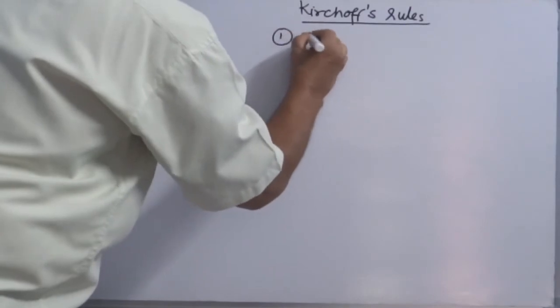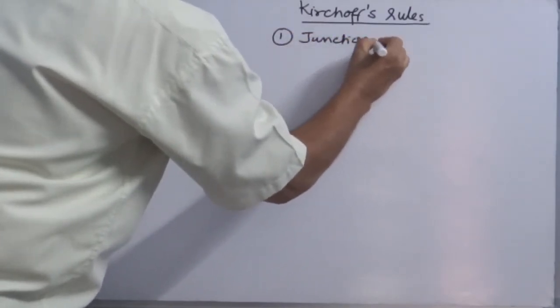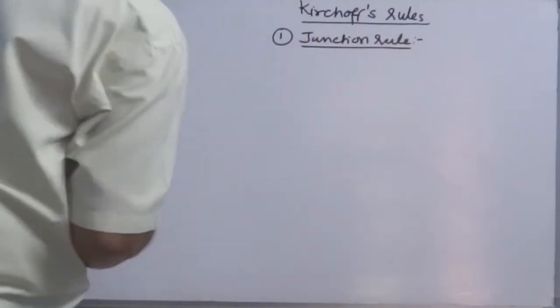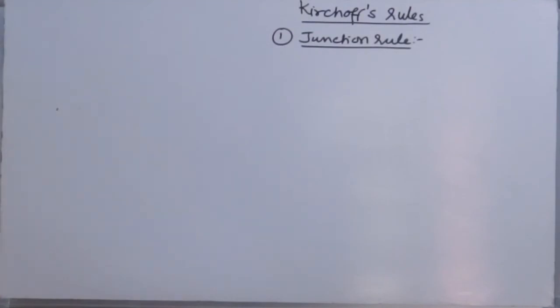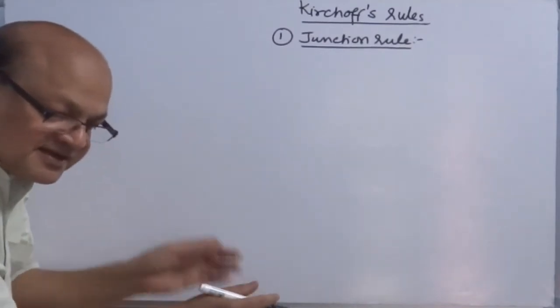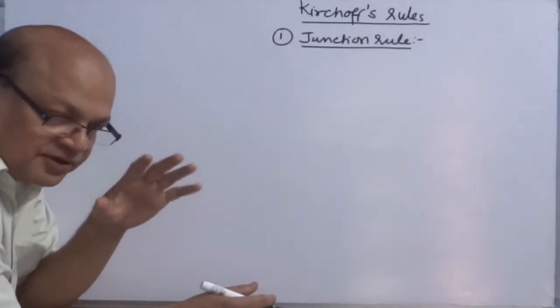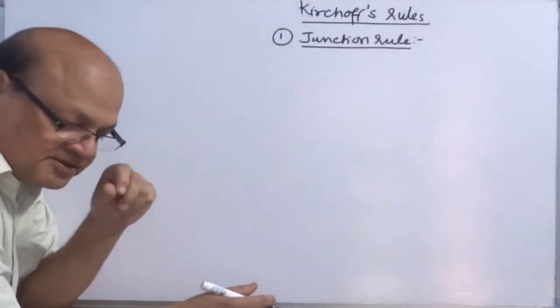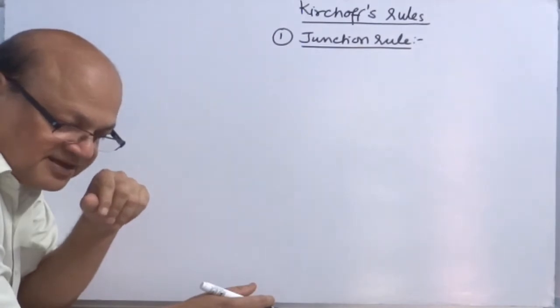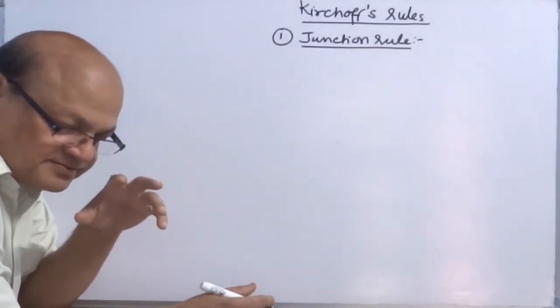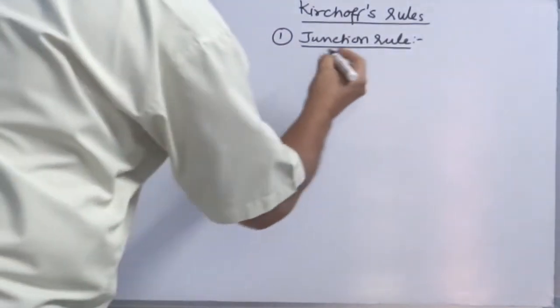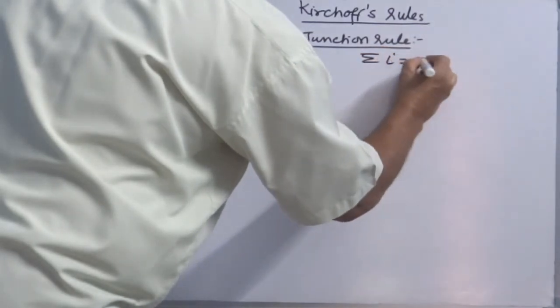What is the statement of Junction rule? It states that for any given junction of an electric network, the total algebraic sum of the currents at a junction is always zero. Mathematically, you can put it as sigma I equals to zero.